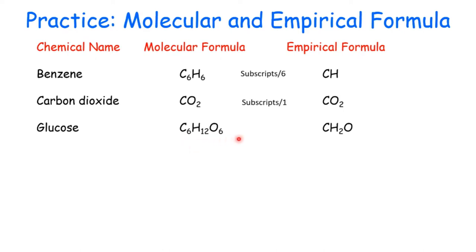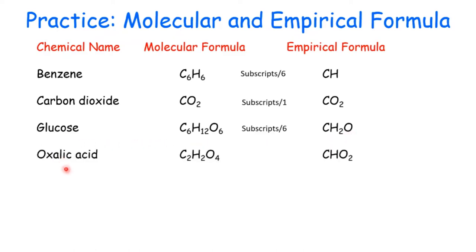Glucose: here is the molecular formula. We divide all the subscripts by the lowest subscript, which is 6 in this one. So then you have CH2O. That's the empirical formula for glucose.